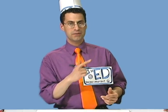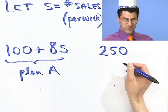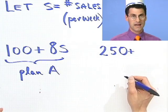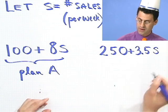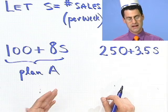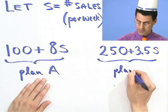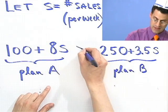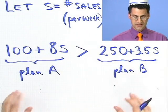What would be my total for the exact same week under Plan B? There I get $250 as a lump sum, plus the bonus is only $3.50 per sale. So that would be 3.50 times the number of sales I make. The question is: how many sales would I have to make so that Plan A is actually more lucrative than Plan B? I want to know when Plan A's total exceeds Plan B's total. So now there's an inequality that I want to solve — we've set up the real world problem.